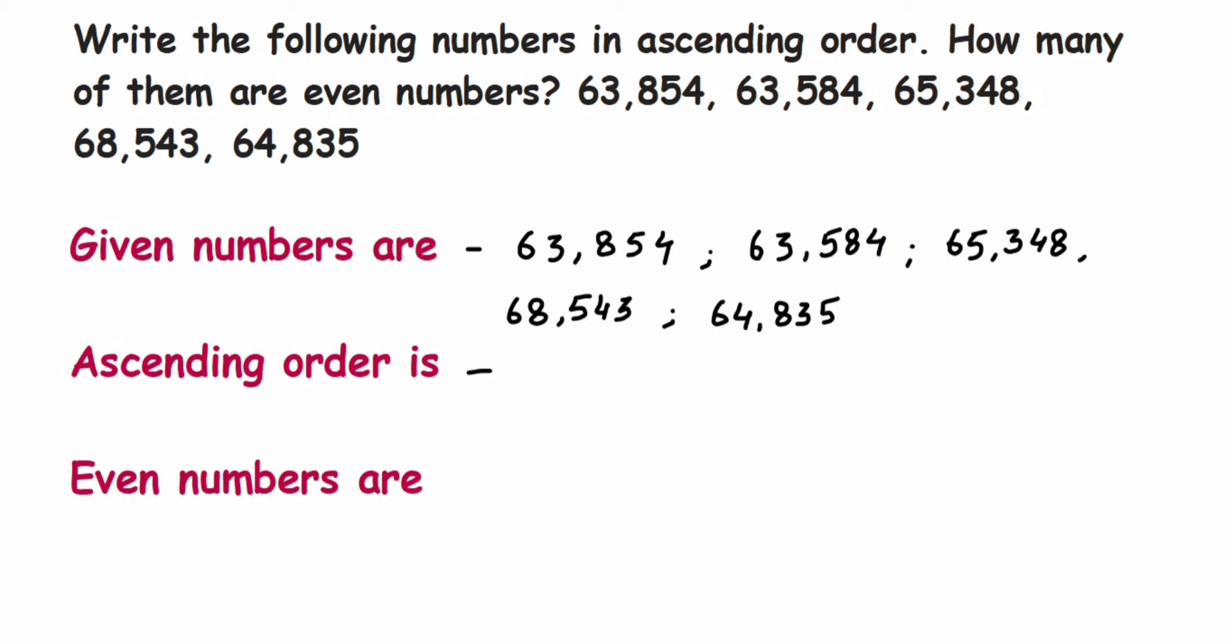If you look here, 63 and 63 is the same. The next digit here is 8 and here it is 5. Since 5 is smaller, the first number will be this one: 63,584.